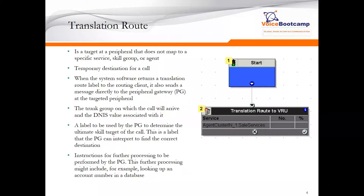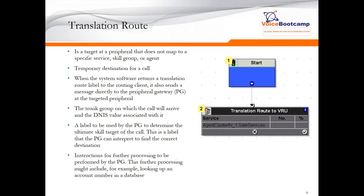A translation route is a routing target at a peripheral that does not map to a specific service or skills group, but is a temporary destination for a call. When the system software returns a translation route label to the routing client, it also sends a message directly to the peripheral gateway (PG) at the target peripheral.